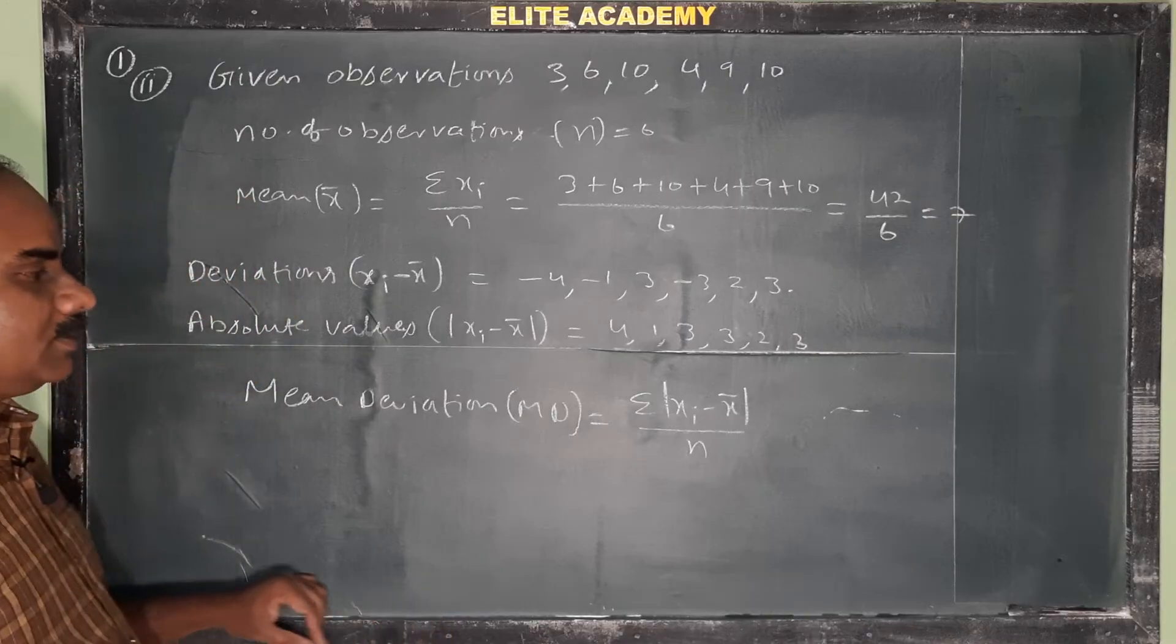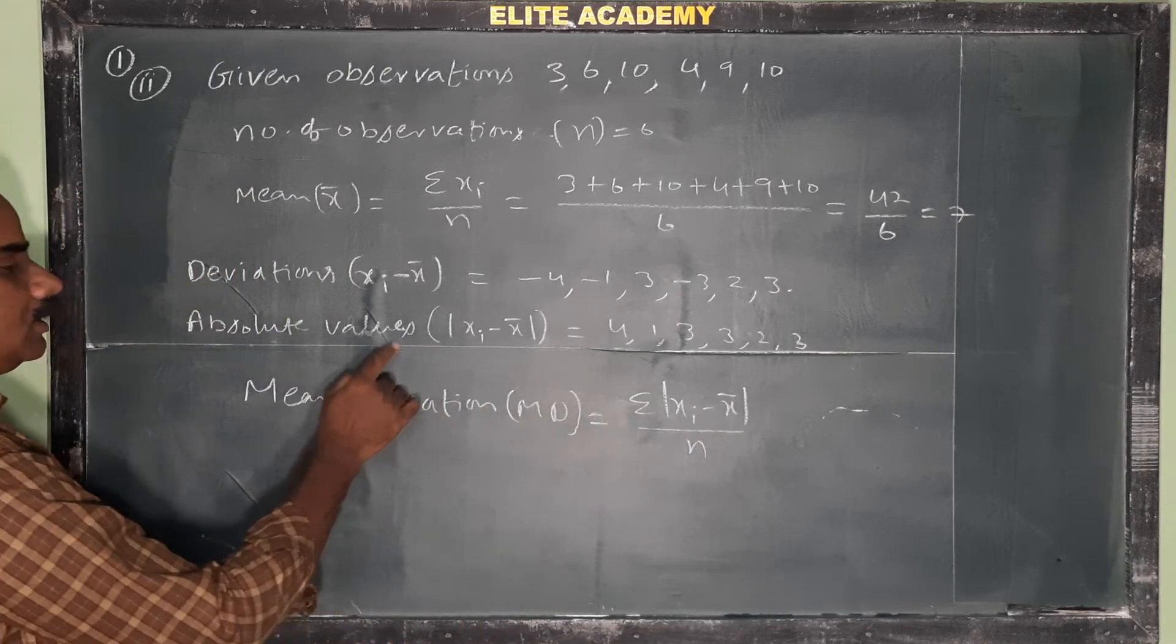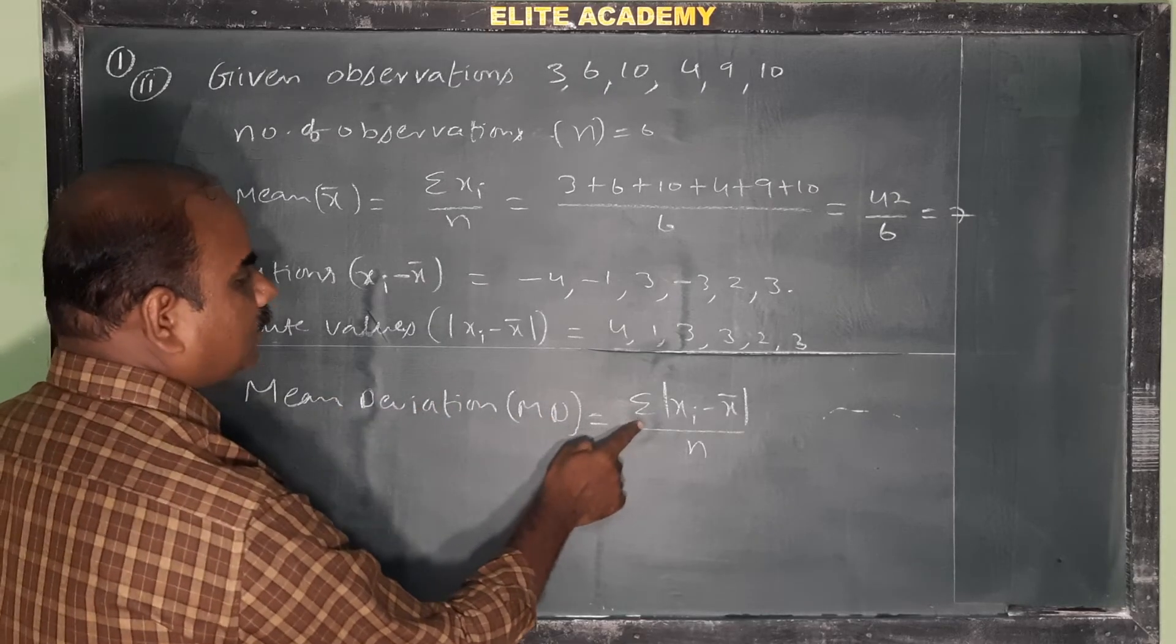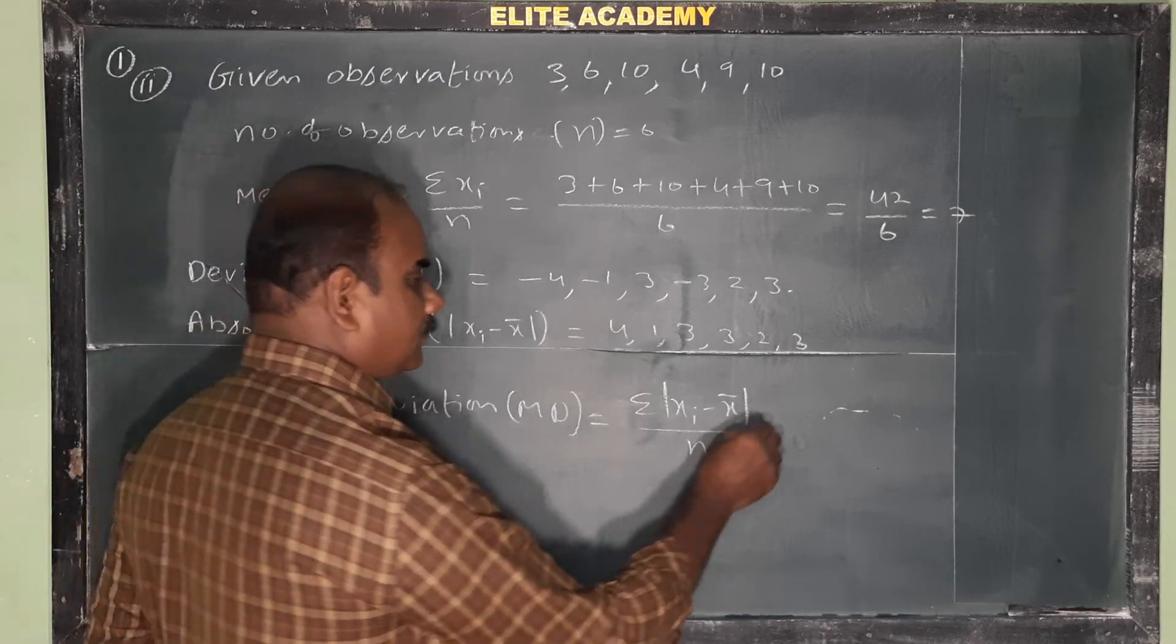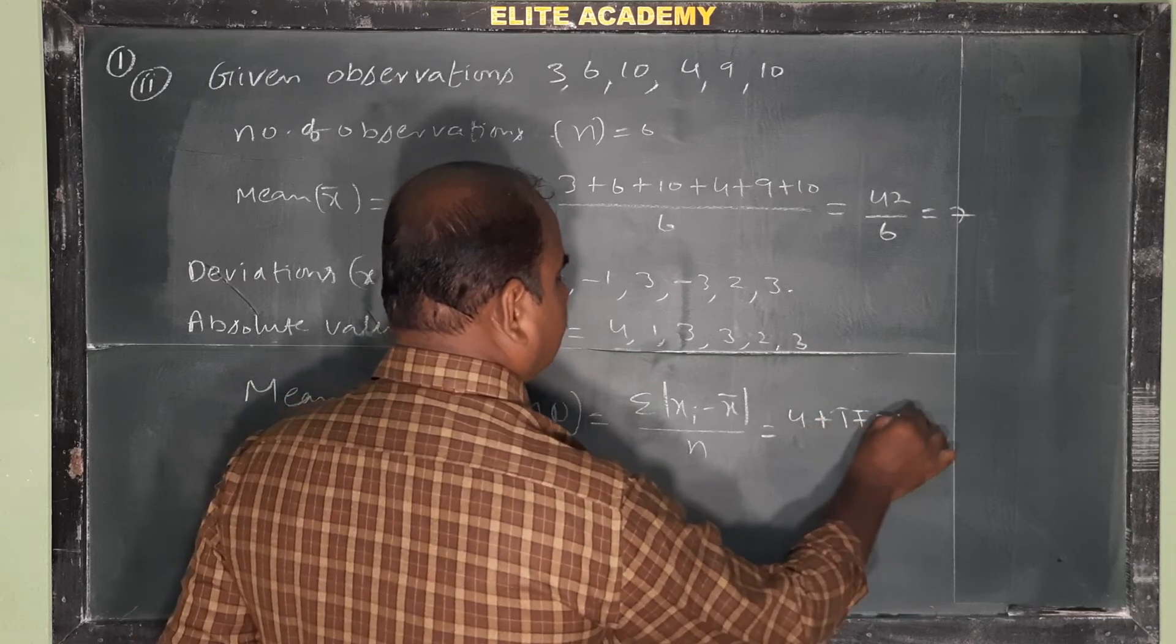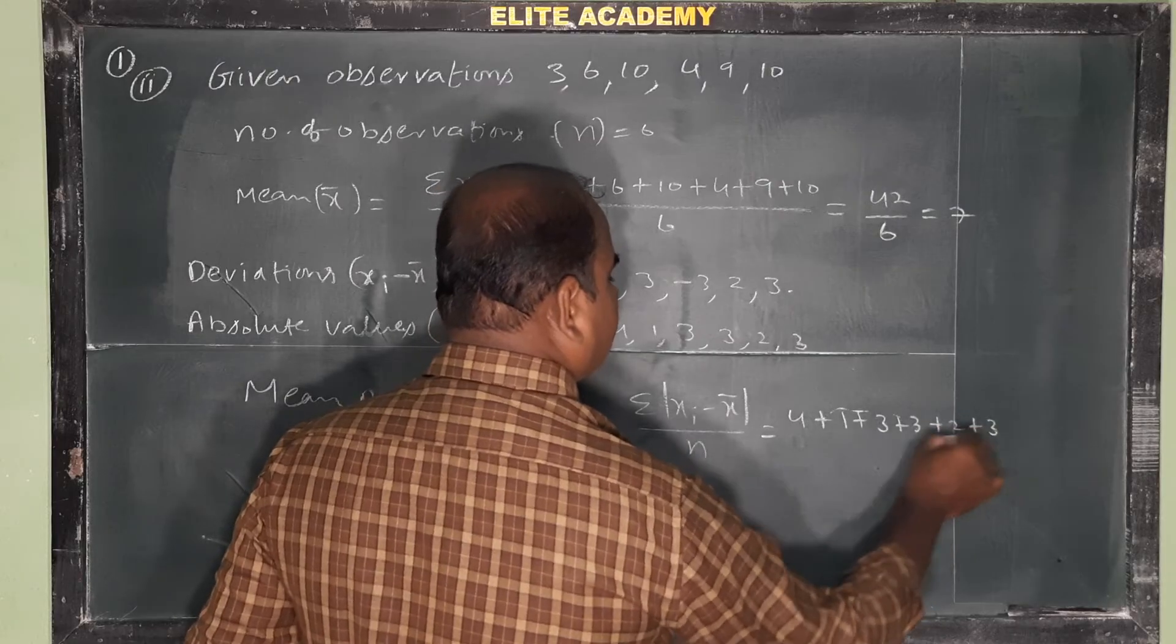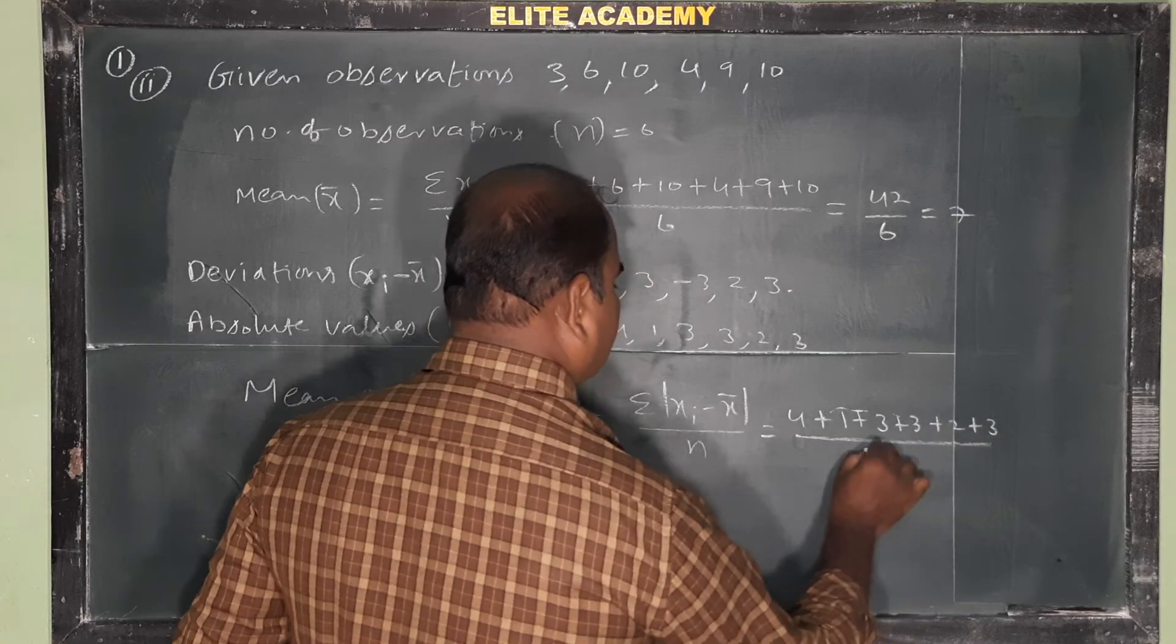So sigma xi minus x bar, modulus of xi minus x bar means these are called absolute values. So the sum of absolute values by n, the number of observations. So 4 plus 1 plus 3 plus 3 plus 2 plus 3 by 6.